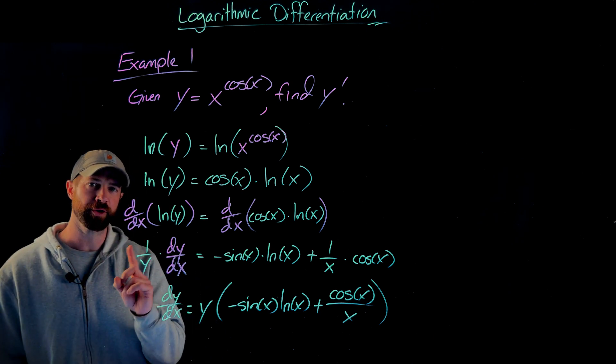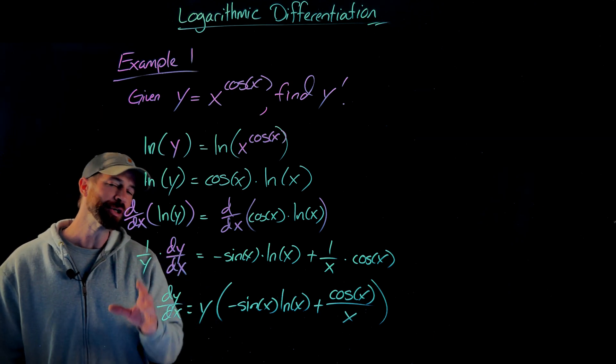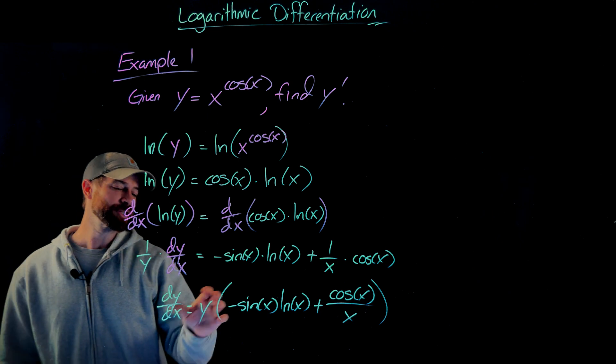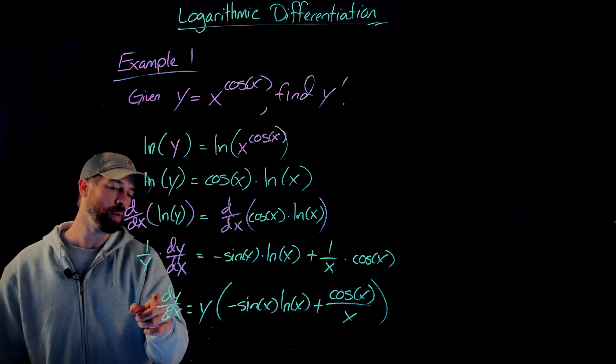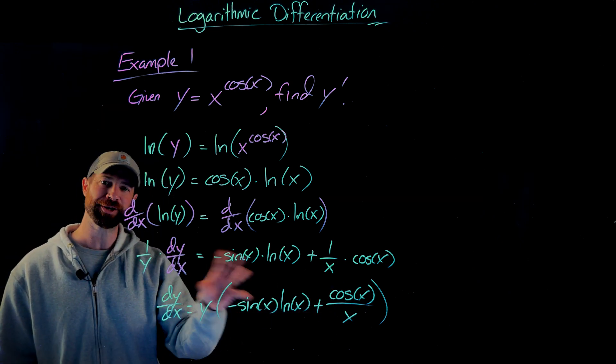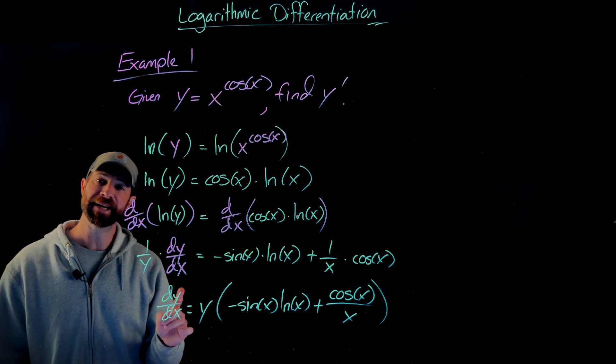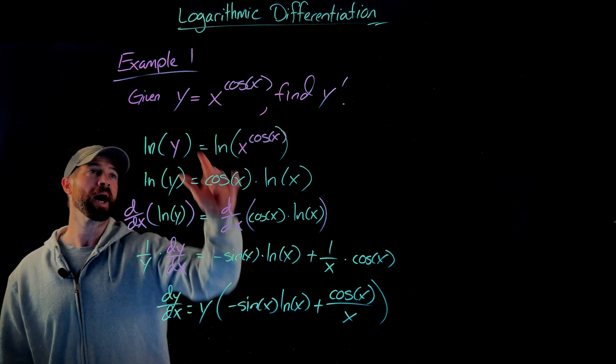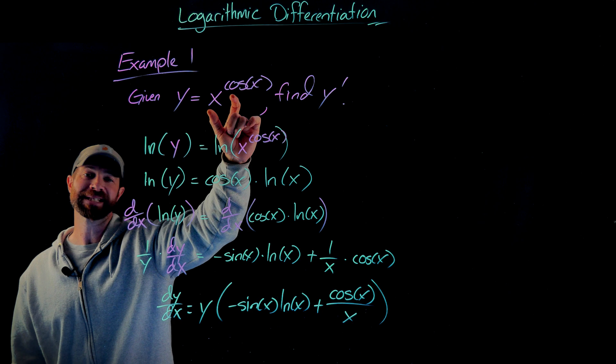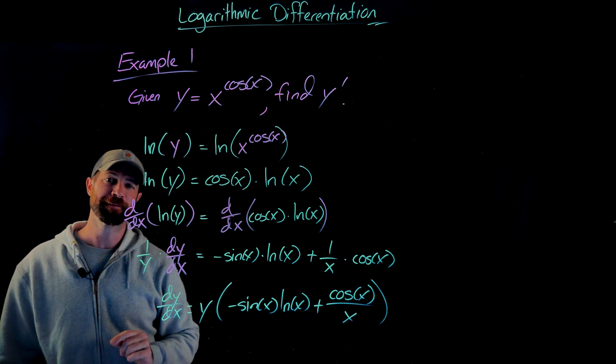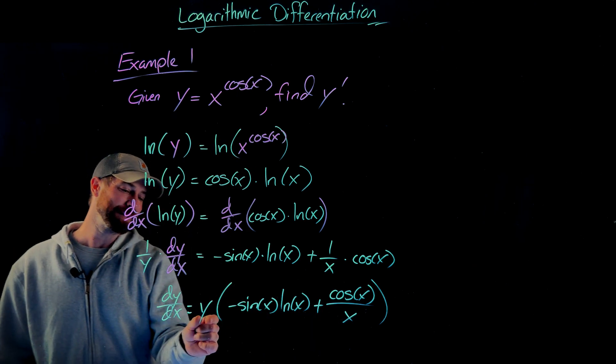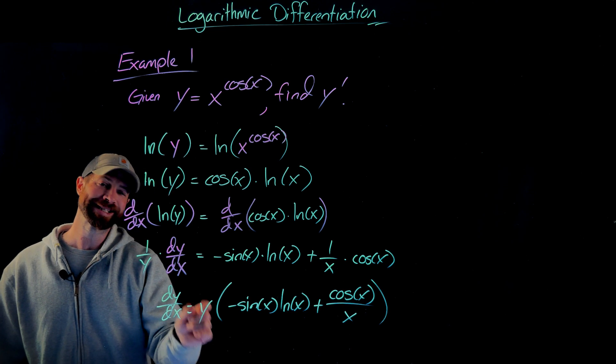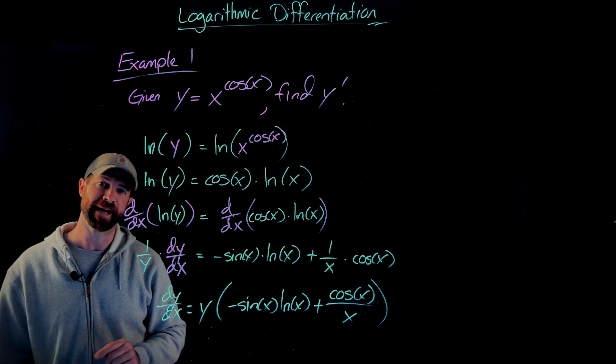That's really almost all of the work. Though you might note, what we want to do, if we can, is to write this expression for y prime, or dy dx, in terms of just x. And actually we can. We know that y is equal to x cosine of x. So all I'm going to do for this last step is I'm going to rewrite this, but instead of y, I'm going to replace it with x raised to the cosine of x.